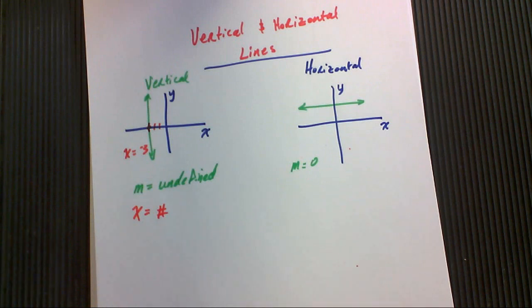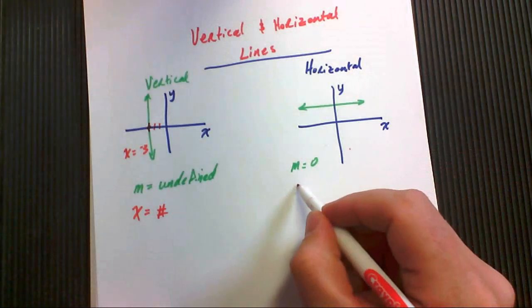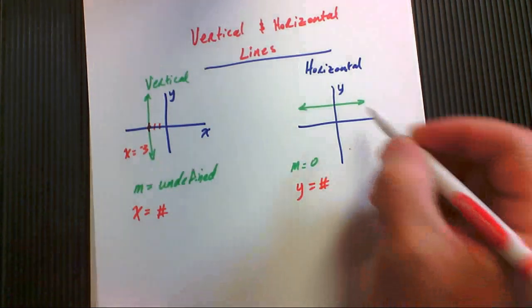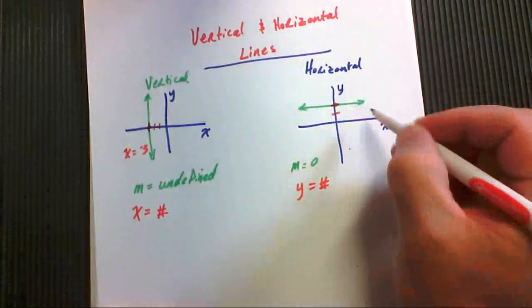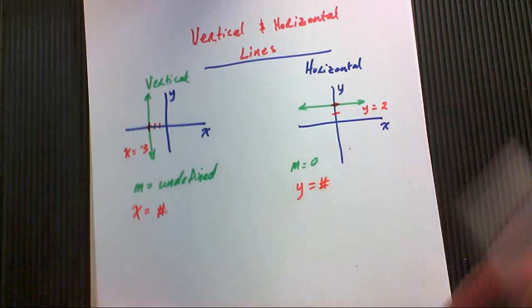The horizontal lines, similarly, they have an equation that looks like y equals some number. So if this was y equals two right here, the equation would be y equals two.